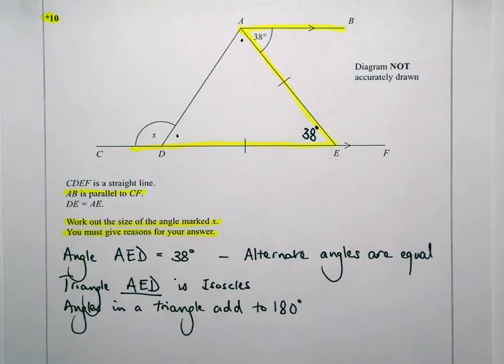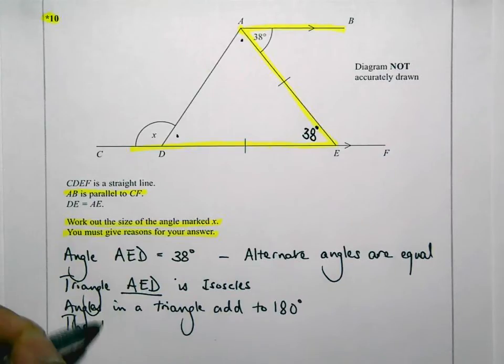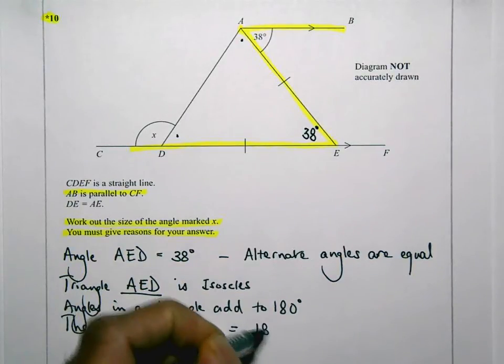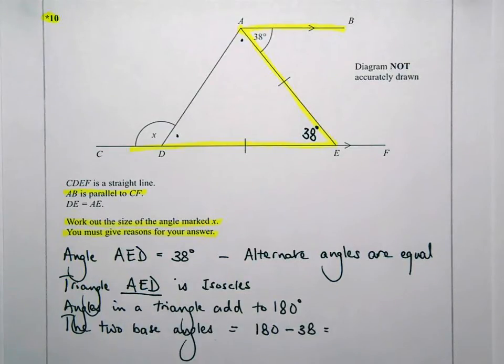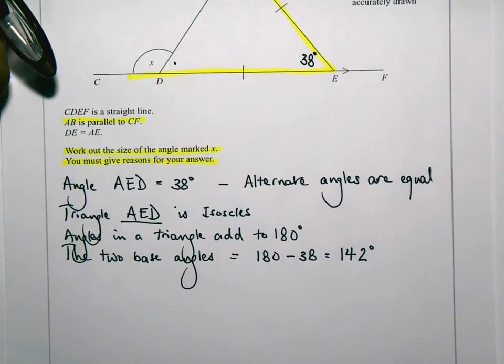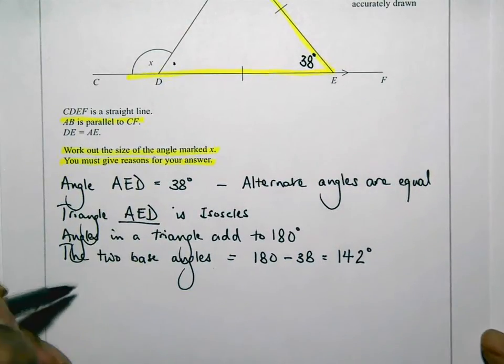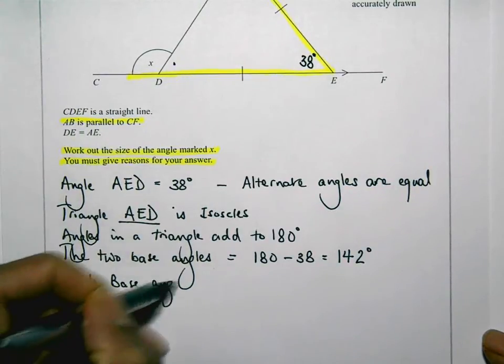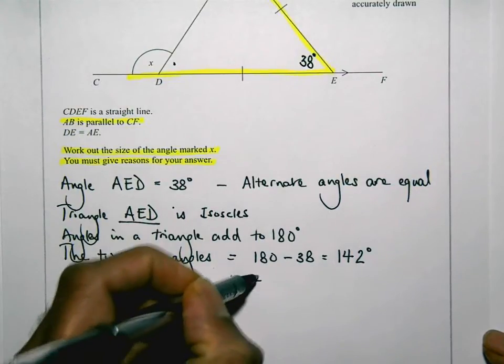So far, I'm actually stating all the reasons and the workings out as well. So because the angles in a triangle add up to 180 degrees, that means that the two base angles are going to be 180 take away 38. 180 take away 38 is 142 degrees. So those two base angles add up to 142 degrees. But because it's an isosceles triangle, the two base angles are equal. So that means each base angle is going to equal 142 divided by 2, which is 71 degrees.